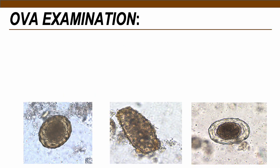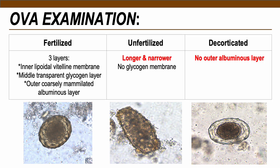There are three forms of Ascaris lumbricoides ova. The fertilized egg is the most common, with a three-layer structure: the inner lipoidal vitelline membrane, the middle transparent glycogen layer, and the outer coarsely mammillated albuminous layer, visible in the picture. This inner layer surrounds the embryo, the middle is a transparent glycogen membrane, and the outer thick layer protects the egg from physical stress in soil and digestive action of the stomach.